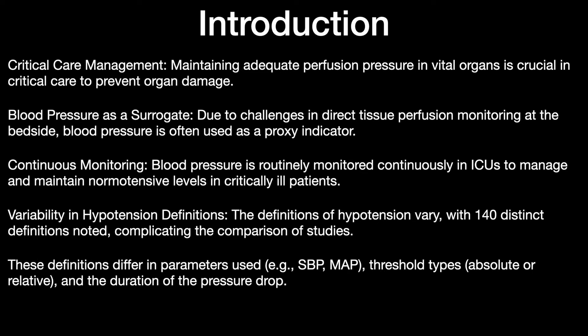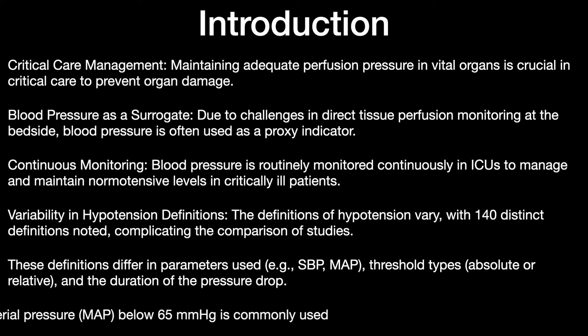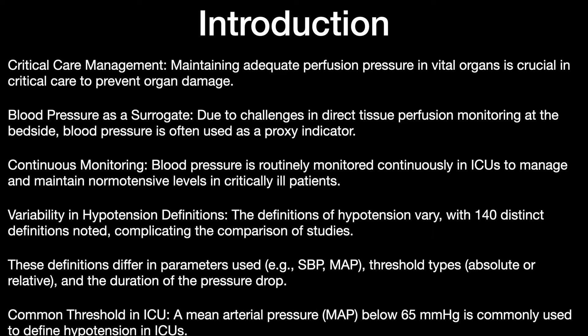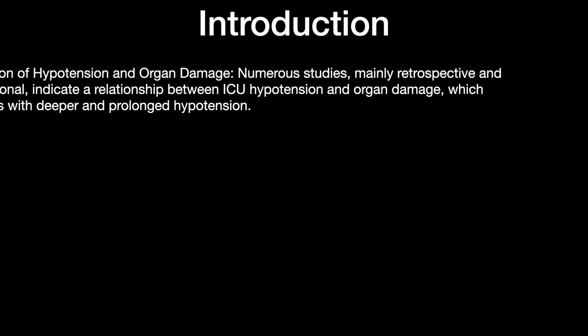The definitions of hypotension vary, with 140 distinct definitions being noted, complicating comparison among studies. These definitions differ in parameters like systolic or mean arterial pressure, thresholds that are absolute or relative, and the duration of the episode. The common threshold in ICU is a MAP below 65 mmHg, which is commonly used across most ICUs as the definition for hypotension.